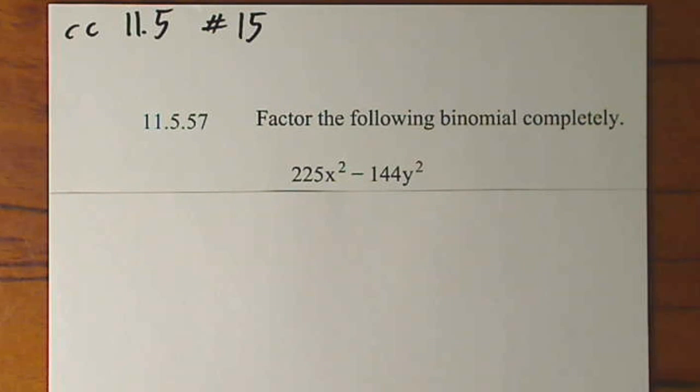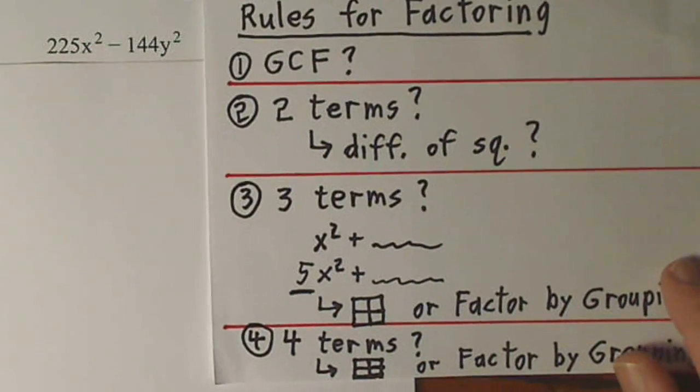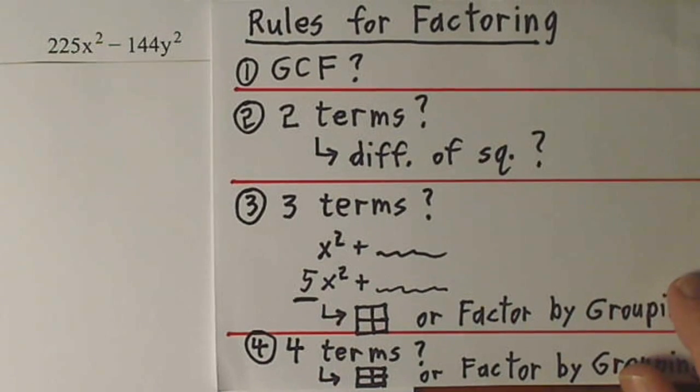All right, we're asked to factor this binomial. It's good to have a little bit of a roadmap. I've suggested using, perhaps at this point, these four rules.